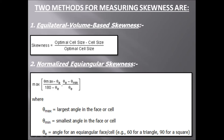The normalized equiangular skewness is applicable for all types of elements — whether prism, tetrahedral, quadrilateral, or anything else in the meshing. For elements that include both triangles/tetrahedrals and prisms, the solver will calculate both the equilateral volume-based skewness and the normalized equiangular skewness, and will report the maximum skewness value.